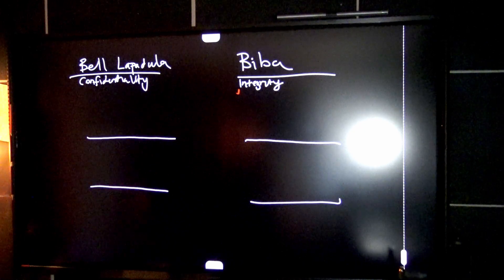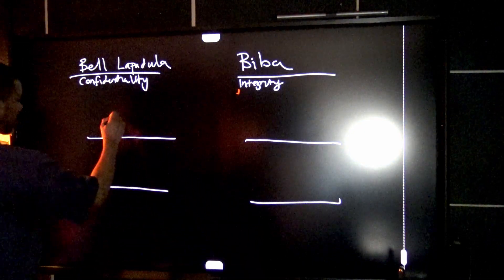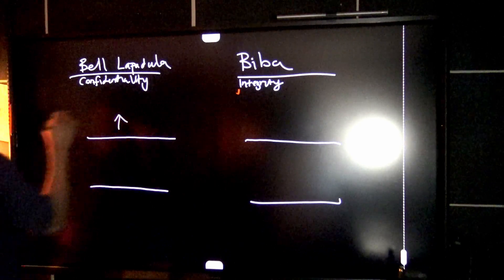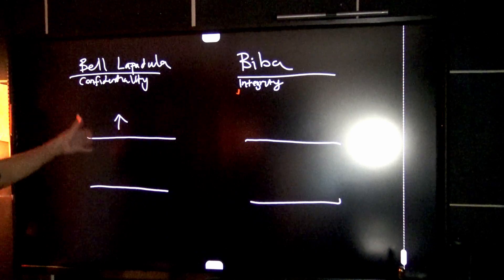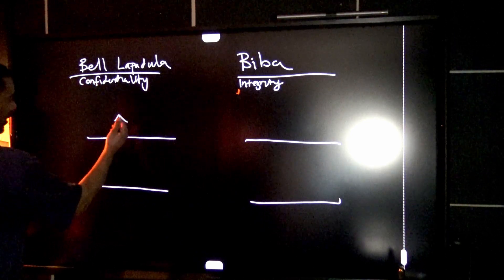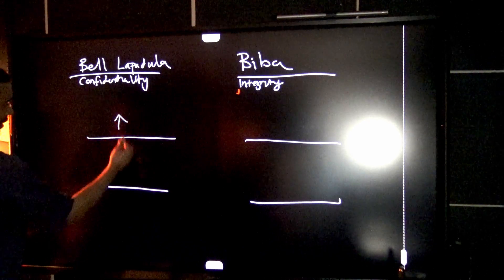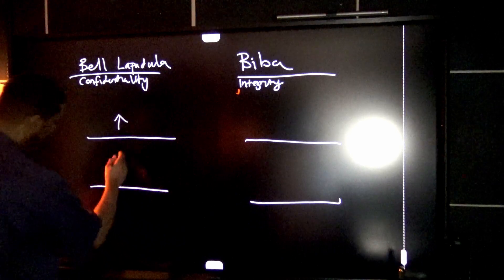We're gonna start off with our confidentiality model and we're gonna draw an arrow up. That's it. Once you get this here, then you pretty much know everything you need for the test. So after we get our first arrow, we're gonna just do the opposite for the rest.